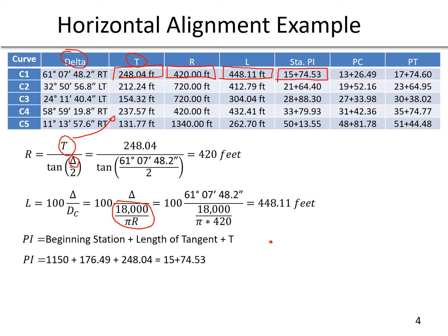Essentially, starting with the beginning station of 11 plus 50, we move along the tangent distance of 176.49 — the first tangent given in our tangent table. At that point the curve starts, but we're establishing where the PI is. We do that using T, which we calculated as 248.04. Adding those three numbers: 1150 plus 176.49 plus 248.04 gives us a PI station of 15 plus 74.53.